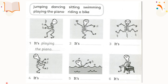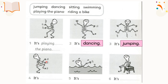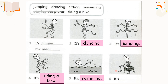Now let's check the answers. Number one — the skeleton is playing the piano; the hands are moving as if they are playing the piano. Number two — it's dancing. Skeleton number three — yes, you're right, it's jumping. Skeleton number four — moving the legs, two hands holding something — yes, it's riding a bike. Number five — the skeleton is swimming. And the last one — the skeleton is sitting. Did you manage to get them all correct? Well done!